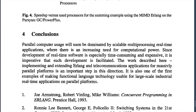Conclusion: parallel computer usage will soon be dominated by scalable multiprocessing real-time applications where there is an increasing need for computational power. Since development of real-time software is especially time-consuming and expensive, it is imperative that such development be facilitated. The work described here — implementing and extending Erlang and a telecommunication application for massively parallel platforms — is an important step in this direction, and is one of the first examples of making functional language technology usable for large-scale industrial real-time applications on parallel platforms.